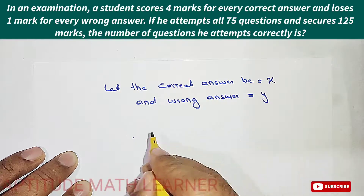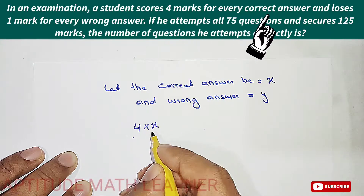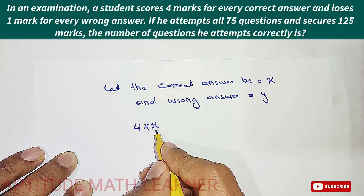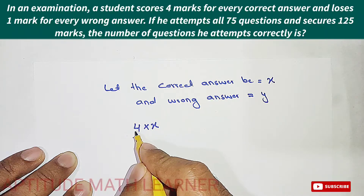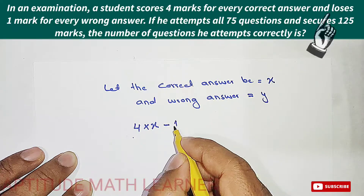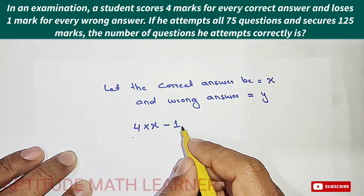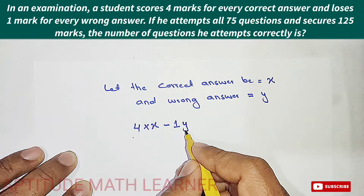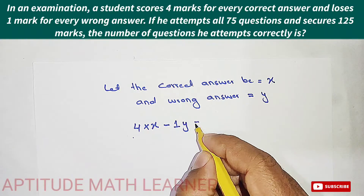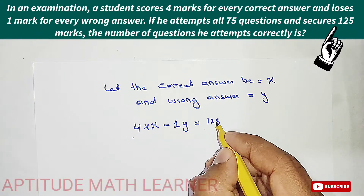For every correct answer, four marks is given, so we multiply four by X for the correct answers. For the wrong answer, there is a deduction of one mark, so it becomes minus Y. The total score equals 125 marks. This is equation one: 4X minus Y equals 125.